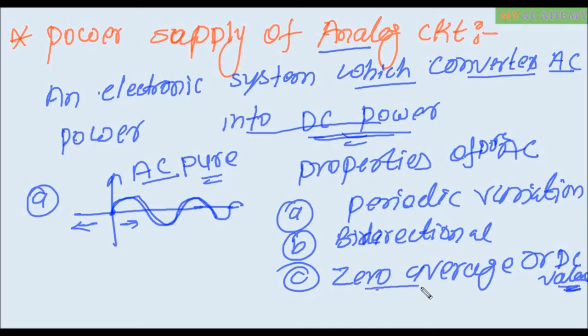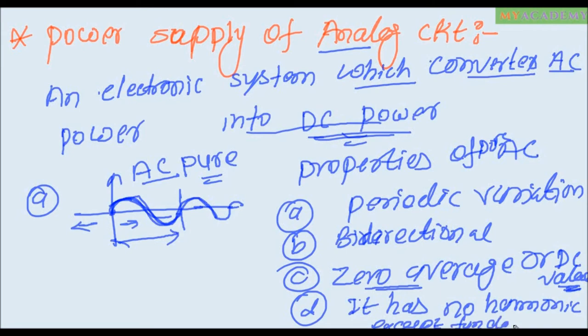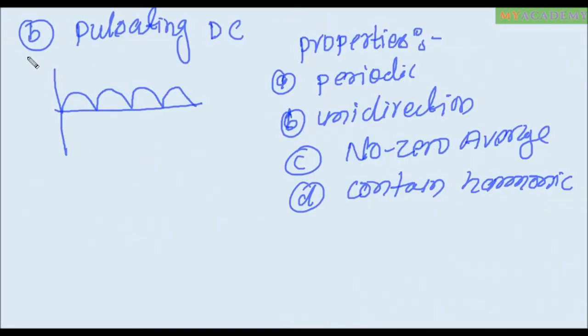Zero DC value means in a AC pure AC signal value of DC signal is zero means average. Pulsating DC is the periodic and unidirectional, is in the one direction, here is just the right side of the signal and non-zero average. If you take the average here and here is positive means your average value will be equal and containing harmonic is harmonic signal included.